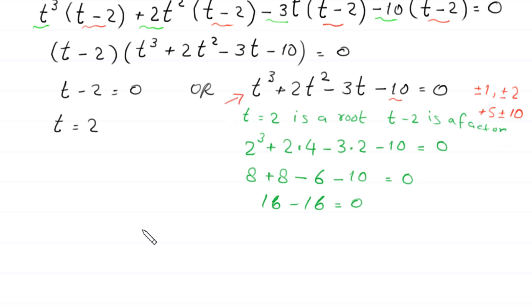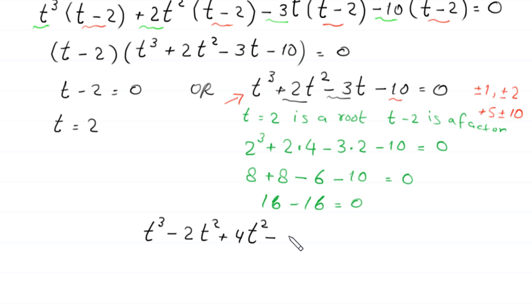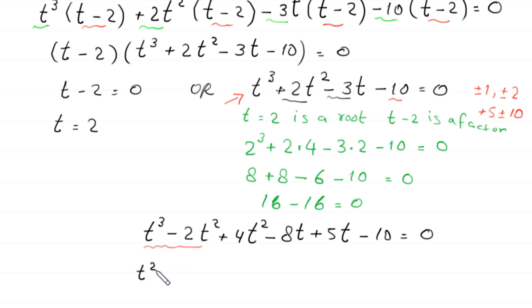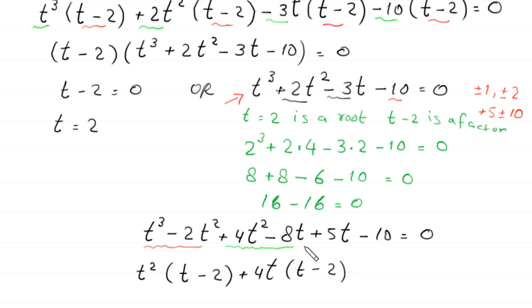We rewrite the cubic t cubed, writing 2t squared as negative 2t squared plus 4t squared, and writing negative 3t as negative 8t plus 5t, minus 10, equals 0. From the first two terms t cubed minus 2t squared, we factor out t squared, leaving t minus 2. From the terms 4t squared minus 8t, we factor out plus 4t, leaving t minus 2. From the last two terms 5t minus 10, we factor out plus 5, leaving t minus 2, equals 0.